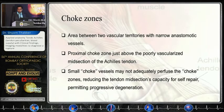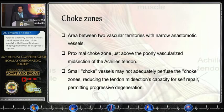There are choke zones — also called the watershed area — in between the blood supply from the peroneal and the posterior tibial arteries, which makes this zone more prone to injury.